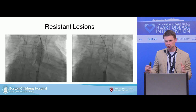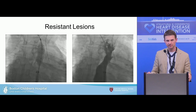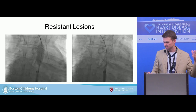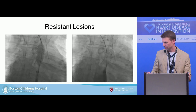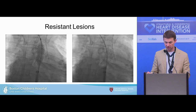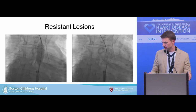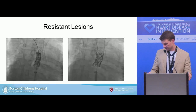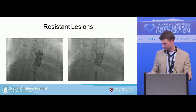Beware of resistant lesions — they don't come up that often. You can see the shape of the stent when it went in 10 years before. After dilation — this was before covered stents were on the shelf, but as part of the COAST trial — dilation was performed, there was a clear tear in the aorta, and a covered stent was placed to seal it. Beware of long-segment resistant lesions.